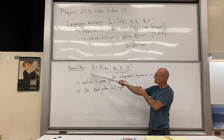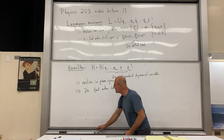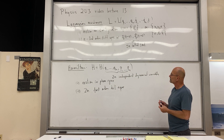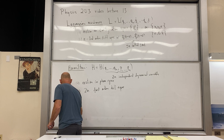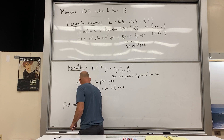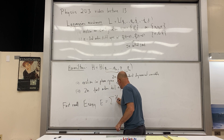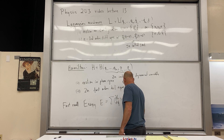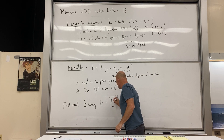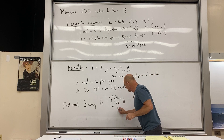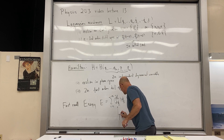Hamiltonian mechanics follows from Lagrangian mechanics, so to build it up we start there. Recall our expression for the energy: E equals the sum of (∂L/∂q_i-dot) times q_i-dot minus L. We know this quantity ∂L/∂q_i-dot is our canonical momentum p_i.